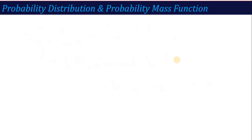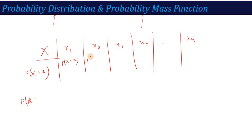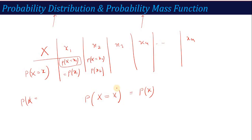When you know a random variable, here is an important concept: what is probability distribution and what is probability mass function. For a random variable X, it can take different values x1, x2, x3, x4, up to xn — then it will be discrete. We calculate the probability when capital X equals some small x. This is called the probability mass function, or PMF in short — probability of random variable X equals x, given simply by P(x), the probability of that particular event.